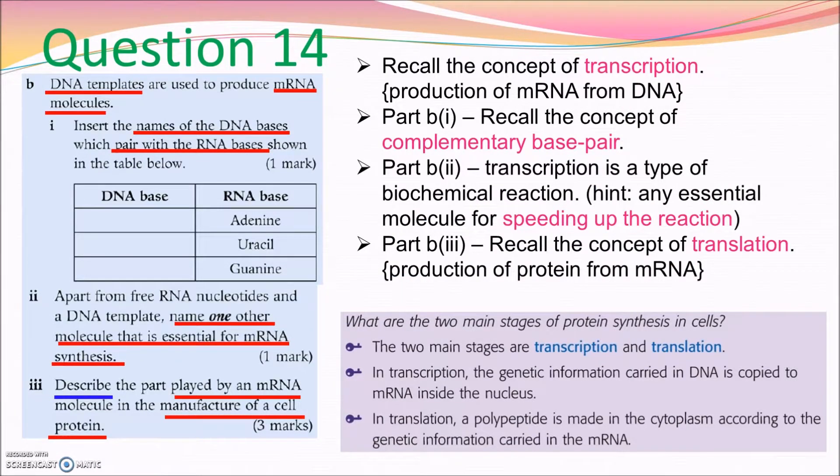Question 14, part B. Part 1, you need to recall the complementary base pairing concept. It can help you to deal with the question easily. The only thing I want to remind you is that the DNA strand only contains A, T, C, G, but never U. Of course, please write down the full name of the base, but not just the letter. Don't be lazy.